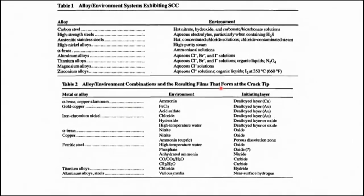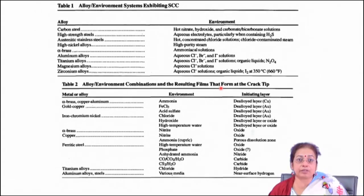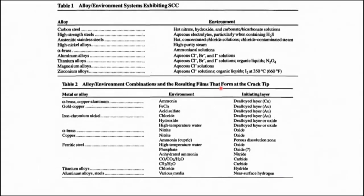Aluminium alloys, titanium alloys, magnesium alloys, and zirconium alloys undergo stress corrosion cracking in chloride-containing, fluorite-containing, or iodide-containing solutions. It is very important to understand why this stress corrosion cracking behavior is environment specific.